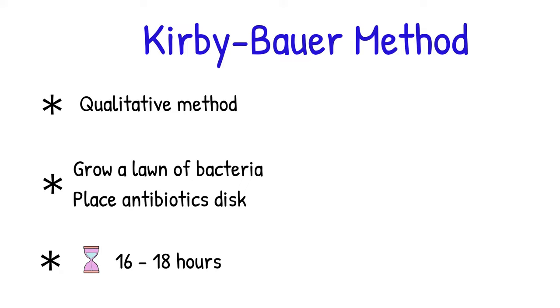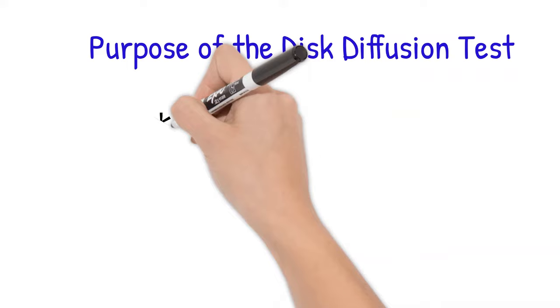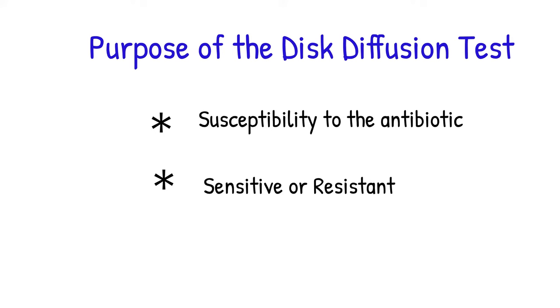The clear media surrounding the disc indicate that the antibiotic inhibits bacteria growth. The purpose of the disc diffusion test is to determine the susceptibility sensitivity to the antibiotic of the bacteria. This test tells you how sensitive or resistant the bacteria of interest is to various antibiotics.